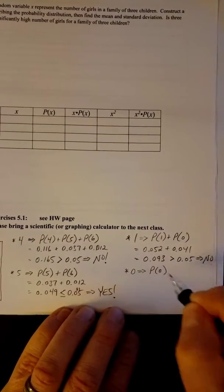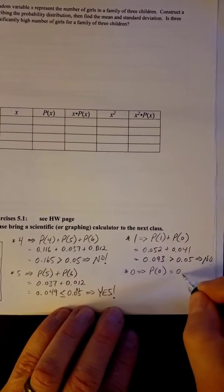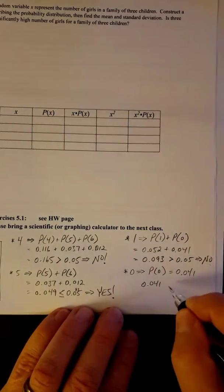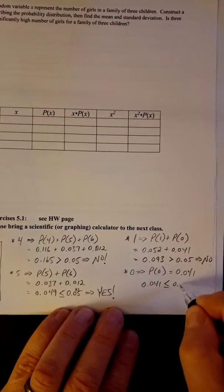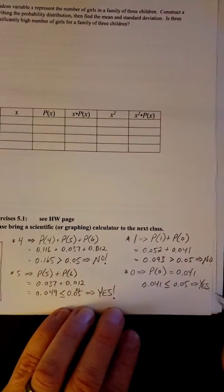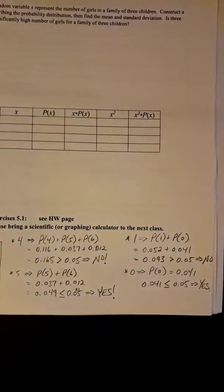And then it also asked about 0. Now there's nothing less than 0, so all you've got to look at is the probability of 0, which is 0.041. So 0.041 is less than or equal to 5%. So the answer is yes.